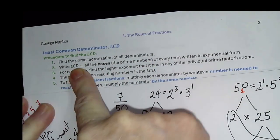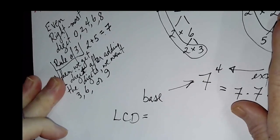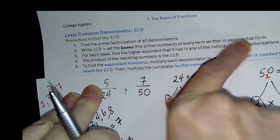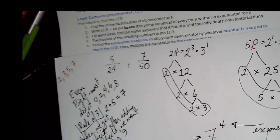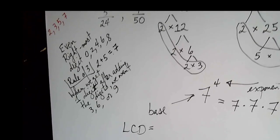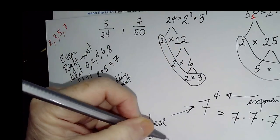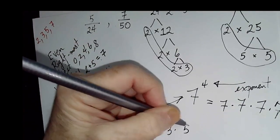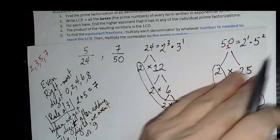Then it says to write the LCD. Write LCD equals. And we want to write all the bases of every term in the exponential forms. So we have 2 and 3 as the bases for 24. So I'm going to put 2 and 3. We already have the 2 for the 50, but we don't have a 5 yet. So 5. That was step 2, we wrote down all the bases, all the big numbers at the bottom, for the prime factorizations.